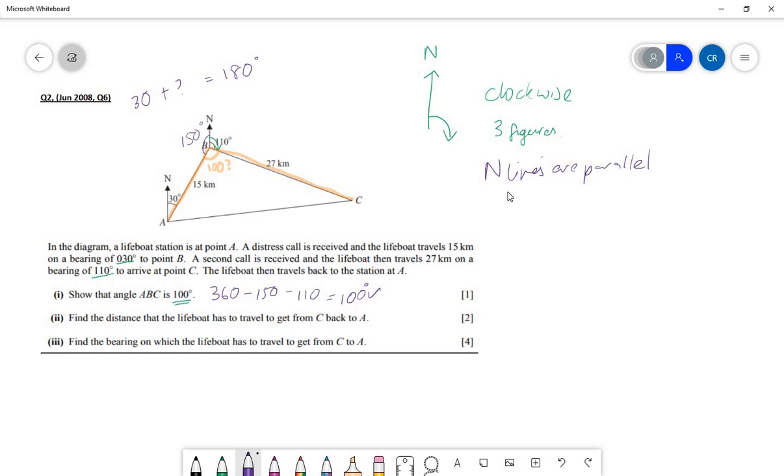I'm going to just ignore question part two. Let's look at part three: find the bearing on which the lifeboat has to travel to get from C to A. When you're trying to discover which bearing, look at the word from and that's where you draw your north line. So we draw a north line at C because we're measuring from C to get to A. We measure clockwise from that north line all the way around until we get onto the line where we're interested in, which is from C to A. That would be the angle you're trying to figure out.